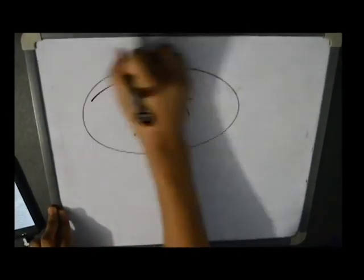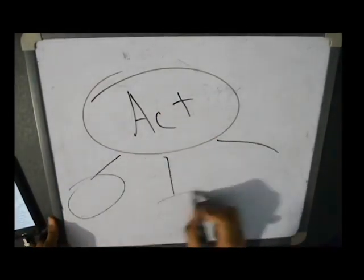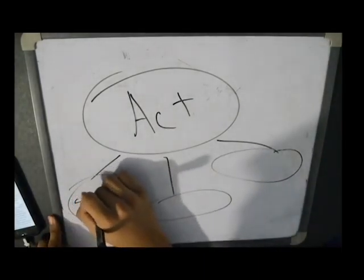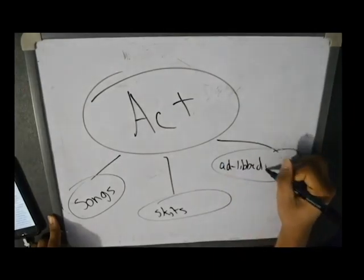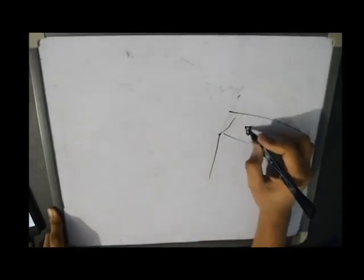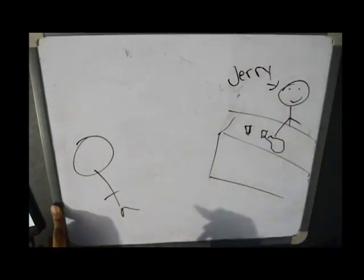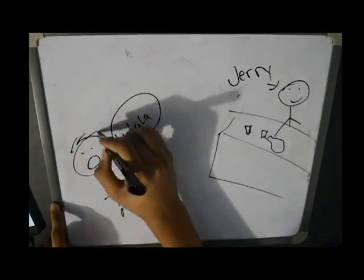Martin and Lewis then decided that they would divide their material up into songs, skits, and ad-libbed material. Lewis used to dress up as a busboy, and Martin would sing. They won the audience over, and when asked, they said their secret was that they ignored the audience and played to each other.